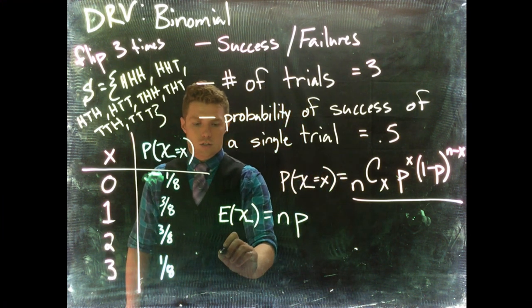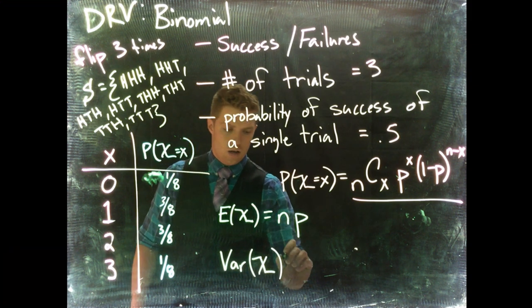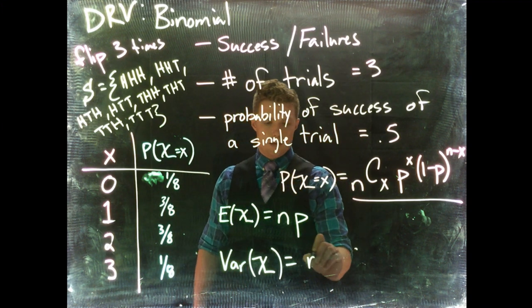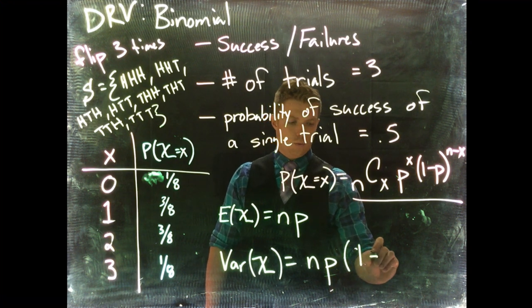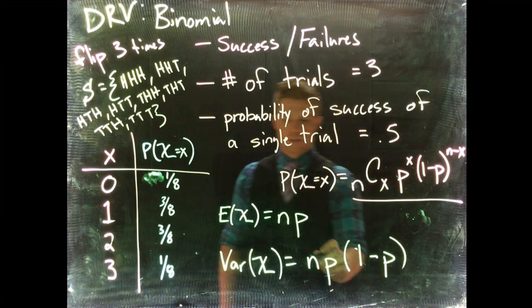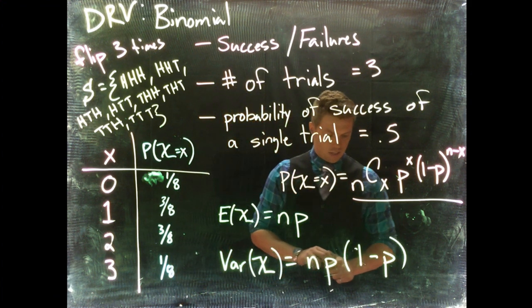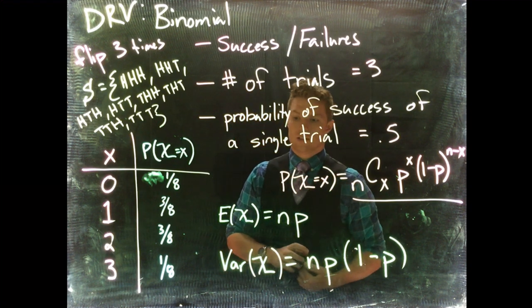And then next, we can do the variance of your discrete random variable. And this one is pretty simple, too. This is going to be n times p. And then all we have to do is 1 minus p, where n is the number of trials that we're doing, and p is the probability of success. So that will give you your variance. If you wanted the standard deviation, you just take the square root of that.